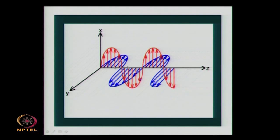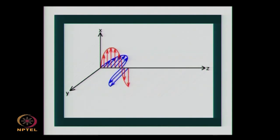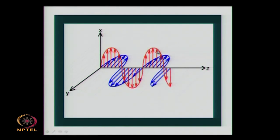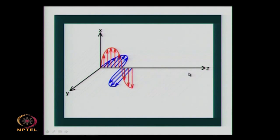It is a very slow animation, but electromagnetic radiation travels at the speed of light, which we obviously cannot show here. Please understand that the red lines and the blue lines — the oscillations — are perpendicular to each other and perpendicular to the direction of propagation.